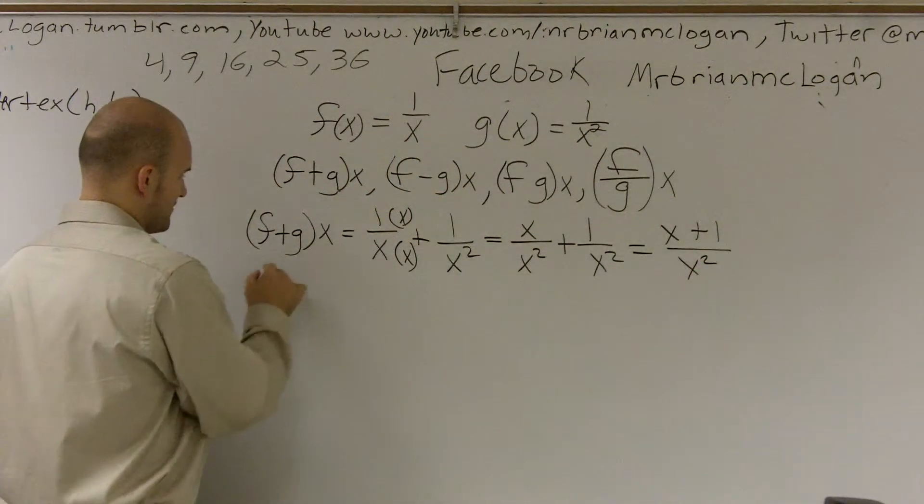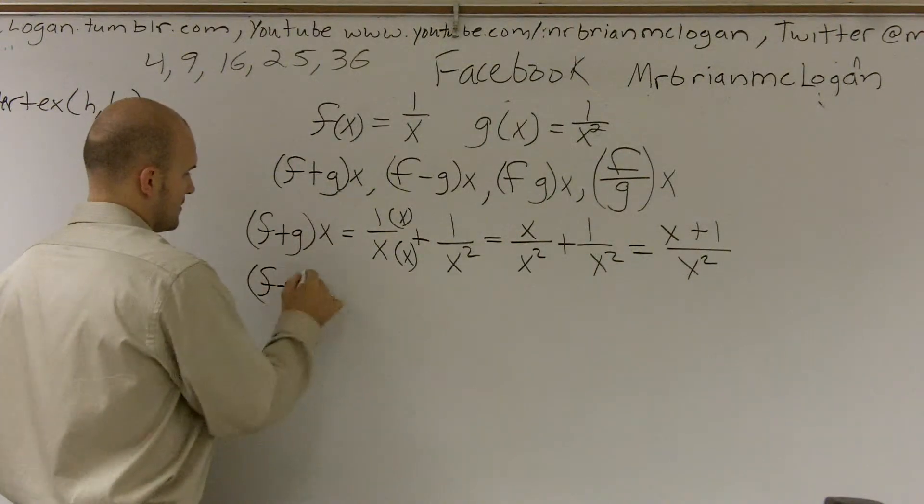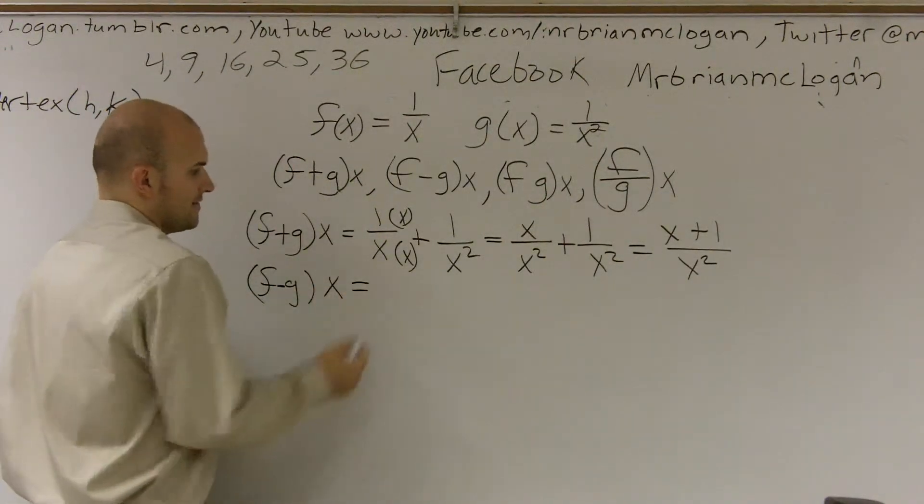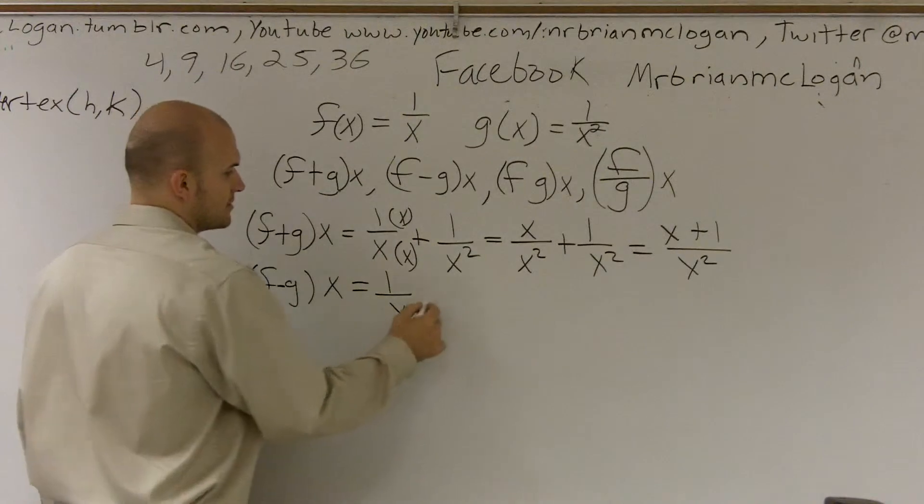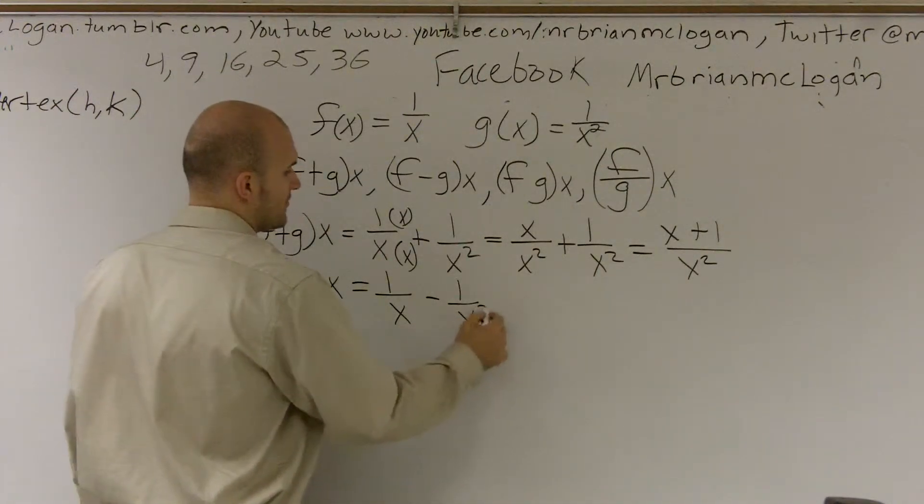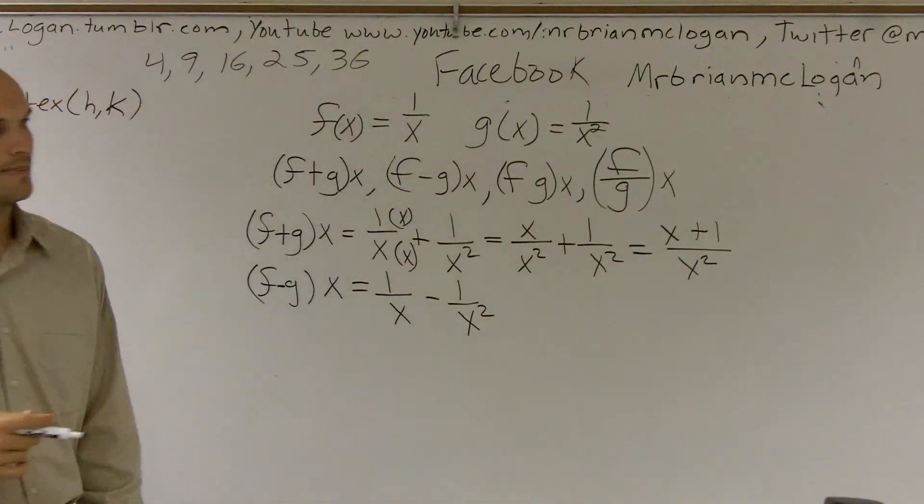If I was going to do f minus g of x, I'd have the exact same thing. It would be 1 over x minus 1 over x squared.